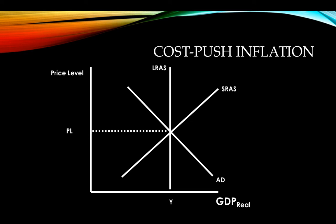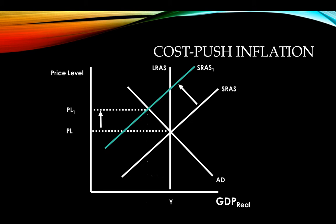Now let's look at cost-push inflation — inflation caused by a movement of the short-run aggregate supply curve. Short-run aggregate supply shifts to the left. We draw our new short-run aggregate supply curve and find the new equilibrium where aggregate supply and aggregate demand intersect. We see an increase in price level, which is inflation, and a decrease in output. Everything is correctly labeled and the graphs have room to breathe. Those are two special named scenarios: demand-pull and cost-push inflation.